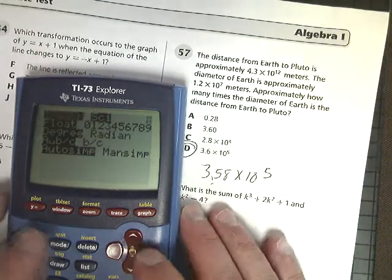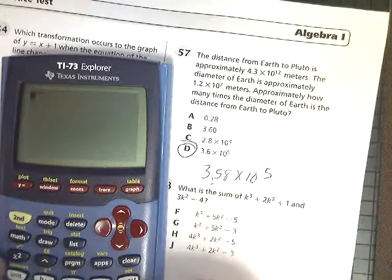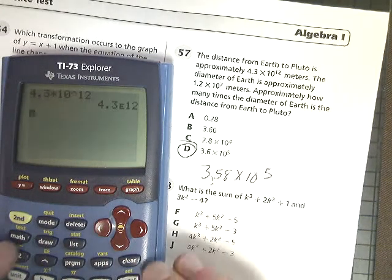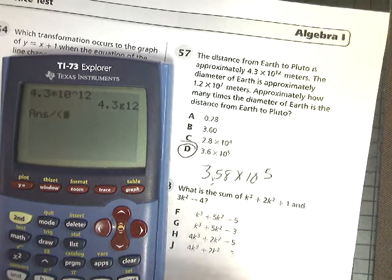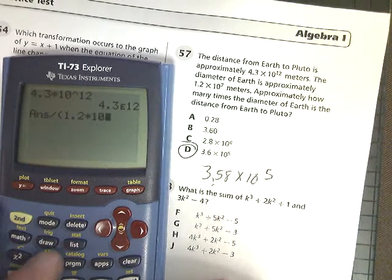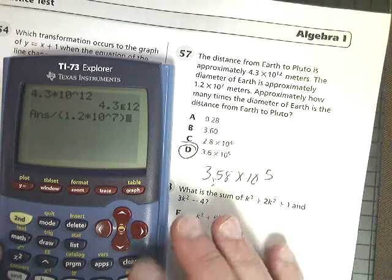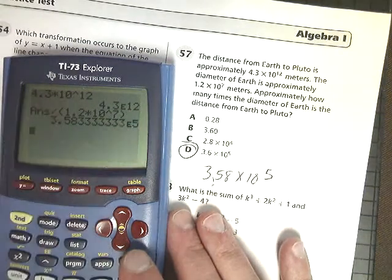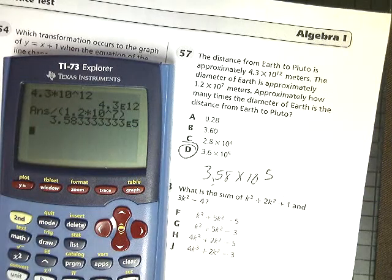Move over just to make sure it's been checked, and then you do 4.3 times 10 to the 12th, and I hit enter, and then divide by 1.2 times 10 to the 7th, and you'll get 3.58e to the 5th. In my calculator, that means the same as times 10 to the 5th, so the answer for number 57 is D.